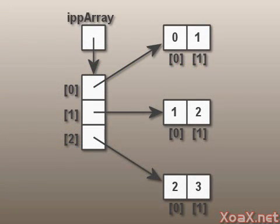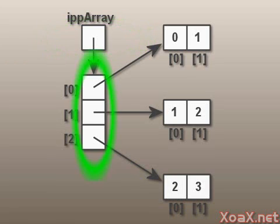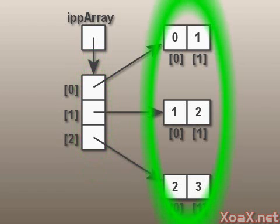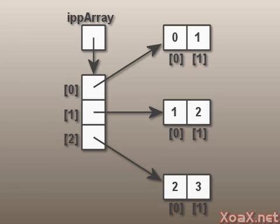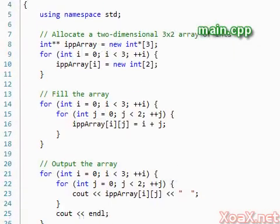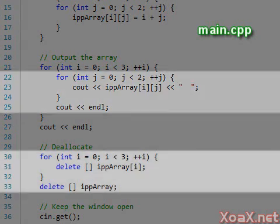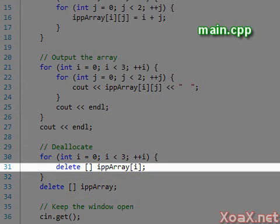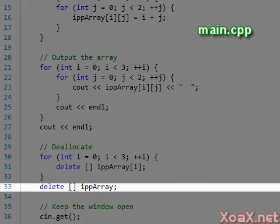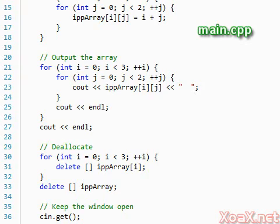Our memory structure looks like this. Starting with the initial pointer to a pointer, this points to the beginning of an array of three int pointers that, in turn, point to arrays of two ints. These arrays hold the entries to our 2D array. Notice that we have four separate arrays that are allocated, and that we have an additional level of indirection. When we deallocate the array, we deallocate each row of entries, and then we deallocate the array of pointers that pointed to the rows. This is the opposite of the allocation order, which is typical when dynamically allocating memory.